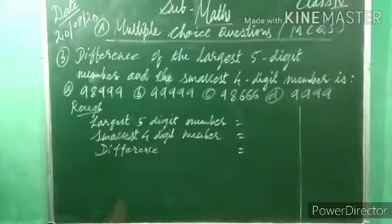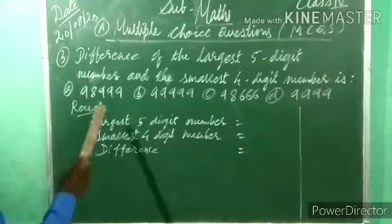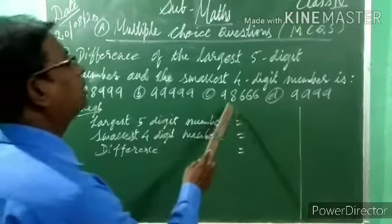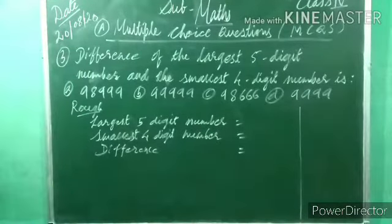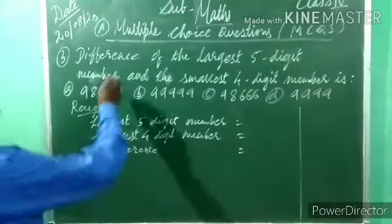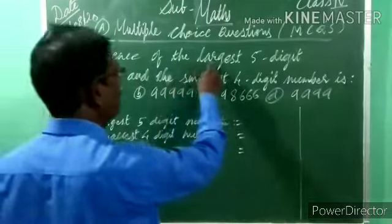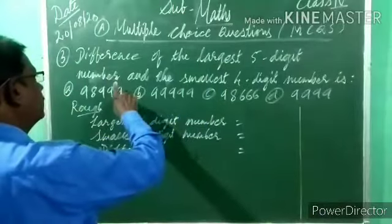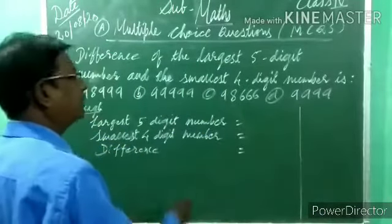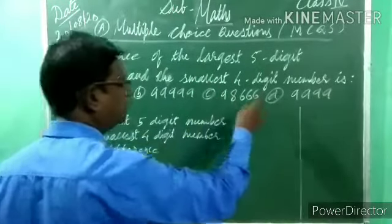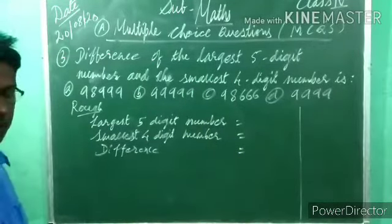Third example: difference of the largest five-digit number and the smallest four-digit number. Options: A) 98,999, B) 99,999, C) 98,666, D) 9,999. Difference means minus.